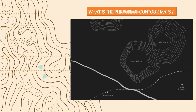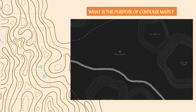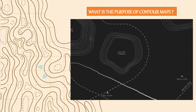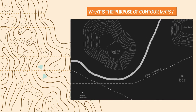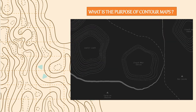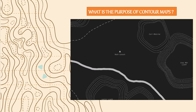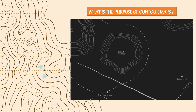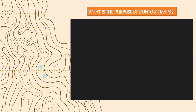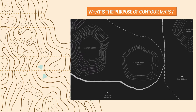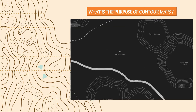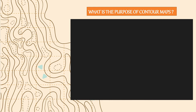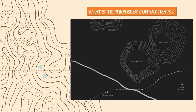Now let us understand the purpose of contour maps. Contour maps or contour lines are imaginary lines that join points of equal elevation and allow you to read the shape of the Earth's surface. By reading contour lines, you can measure the steepness of a hill, the height of a mountain, and even the depth of a lake or ocean. While studying different landforms on the surface of the earth, one has to consider various facets of landforms like altitude, relief, slope, direction of slope, and drainage. Contour maps prepared using particular methods help us understand these characteristics of the landforms.